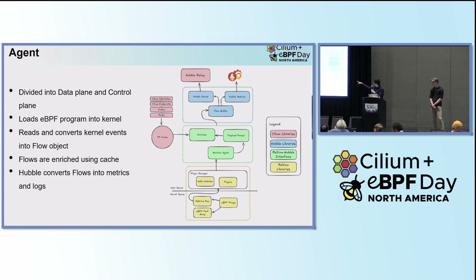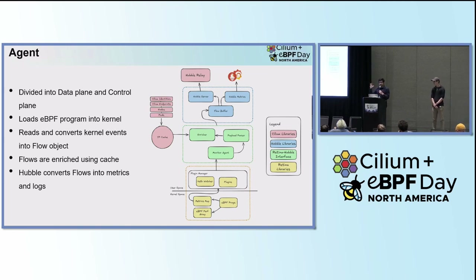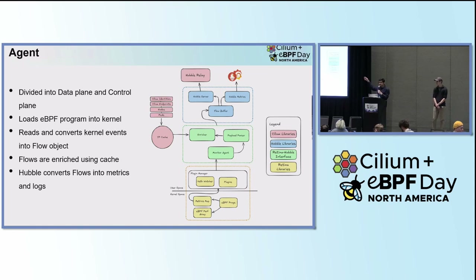Once done, the flow object is forwarded to what we call the Retina Hubble interface. One of the more important things that happens there is enrichment. Imagine you are a DevOps user or Kubernetes cluster maintainer looking at metrics and traces to debug issues. It would be very helpful if the signals included pod name, namespace, or service name instead of just IPs. Enrichment uses a cache of Cilium-specific objects like Cilium identities, endpoints, and pods to enrich these flows with Kubernetes-specific metadata — so you see pod name and namespaces instead of just IP.